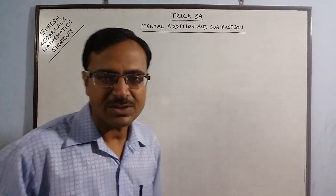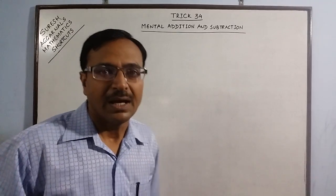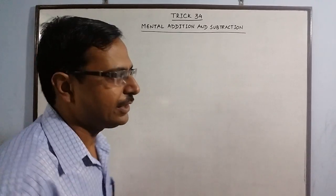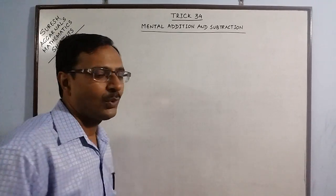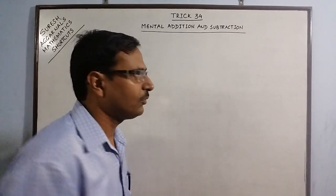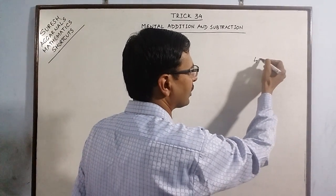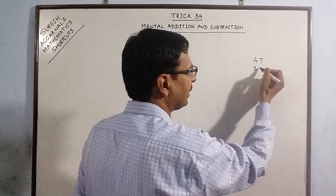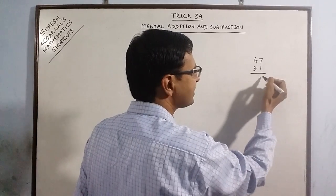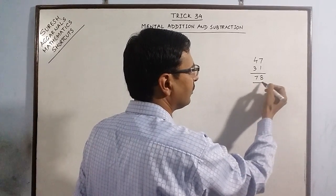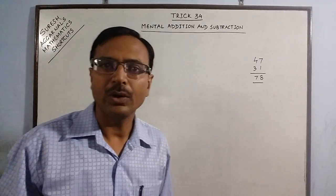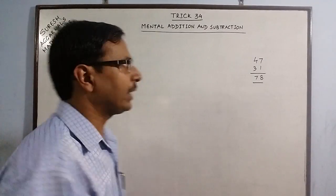In this series, the first method which I am going to discuss is addition from left to right. Now you must be wondering that whenever we add something, say 47 and 31, we add from the right side. Why am I saying that addition is to be carried out in mind from left to right?